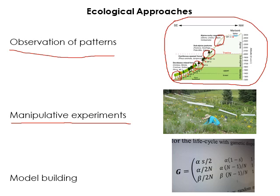Observational studies and manipulative experiments complement each other. A third approach is model building. With model building, you have a hypothesis or some idea about how a system works, and you try to model the most essential components in that system. Ecological systems are very complex, but if we can model the key elements we think are important and run that model and get the same patterns we observe in the real world, then we know our model has good explanatory power.